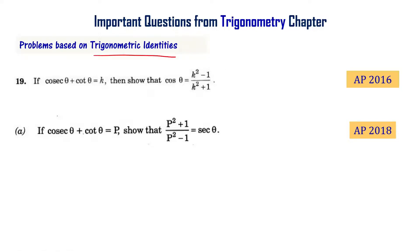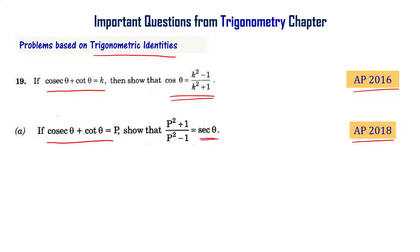Problems based on trigonometric identities are very important. If cosec theta plus cot theta equals k, then show that cos theta equals k squared minus 1 divided by k squared plus 1. This is from the AP final exam 2016. Similarly, if cosec theta plus cot theta equals p, then show that sec theta equals p squared plus 1 divided by p squared minus 1. Both problems follow the same solution procedure.